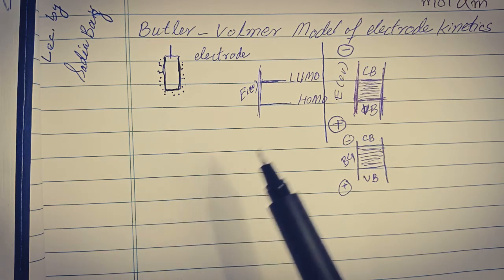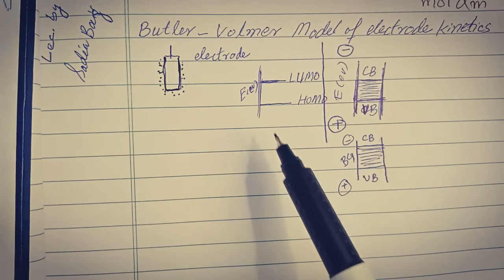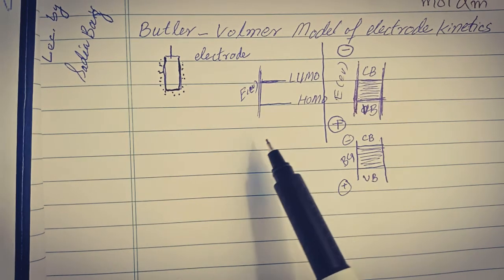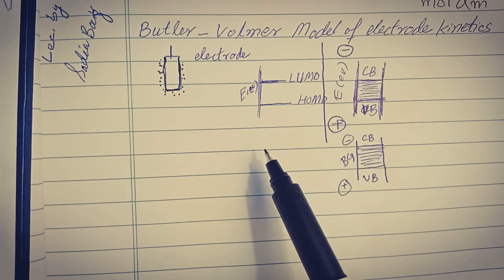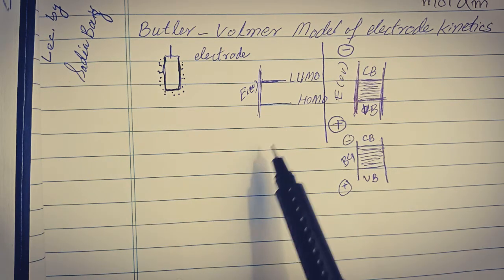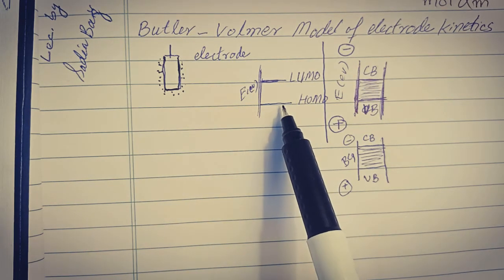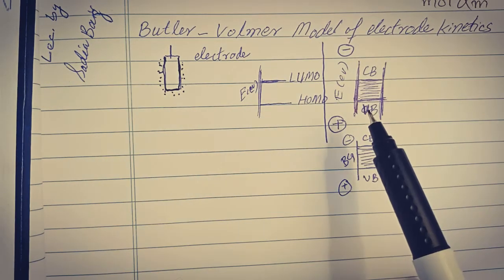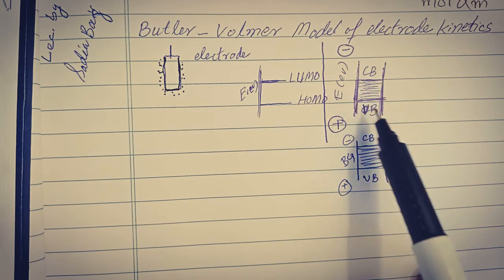These phenomena can be explained using fundamental concepts: for an electrode, if it is an organic material it will have HOMO and LUMO levels, and for metal electrodes we have valence band and conduction band edge.